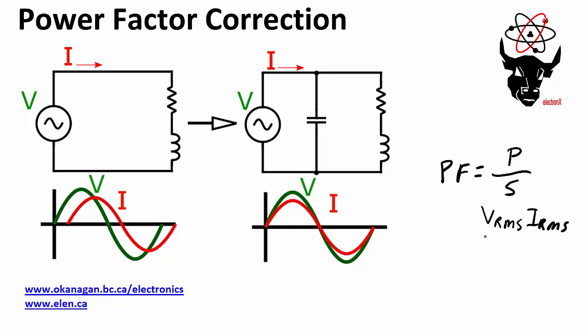Because if your current and voltage are in phase, then your S and your P are going to be the same. And power factor correction involves converting a circuit where the voltage and the current are not in phase with each other to a circuit where the voltage and current are closer to in phase. And if they're perfectly in phase, then your power factor will be one, and that is the ideal situation.